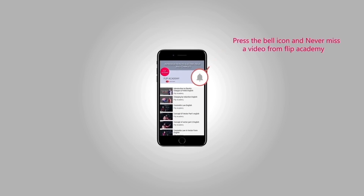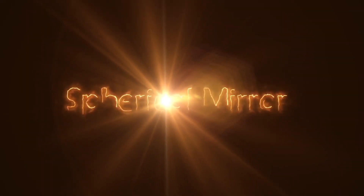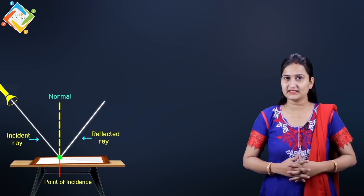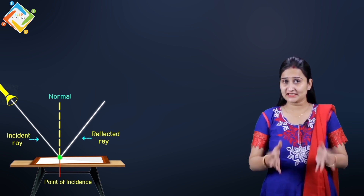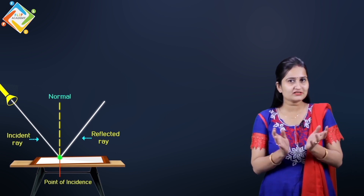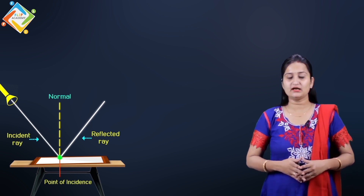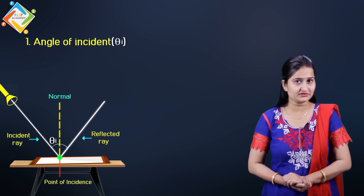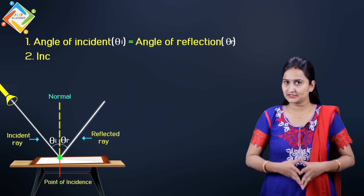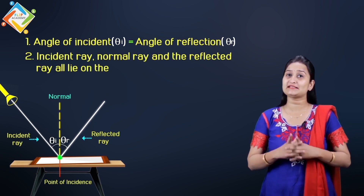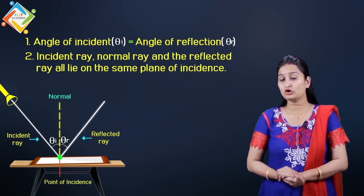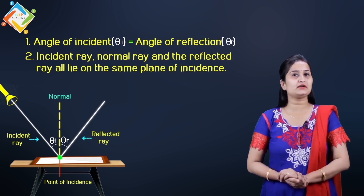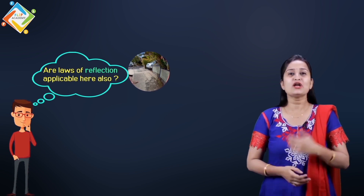Press the bell icon and never miss the video from Flip Academy. After studying about the reflection from the plane mirror, it's now time to change some surface of the plane mirror. In the plane mirror, light follows some laws of reflection: the angle of incidence equals the angle of reflection, and the incident ray, normal, and reflected ray all lie in the same plane of incidence. These laws of reflection also apply to curved mirrors.